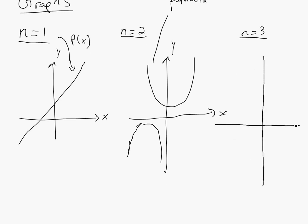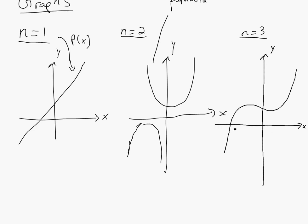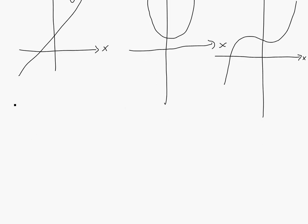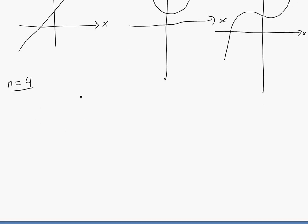And then n equals 3 would just look like something like this, it would go up and then, it would look something like this. I'll actually show you another video on how to graph, how to actually get these.